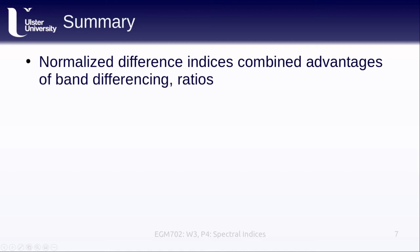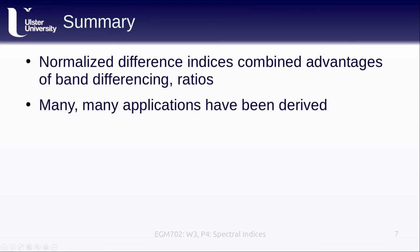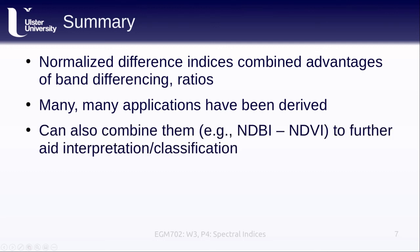To summarize, normalized difference indices combine the advantages of band differencing and band ratios while avoiding many of their disadvantages. There are many, many applications — I've talked about four of them, but there are many more; one of the textbooks has several pages listing different normalized difference indices. We can also combine indices, for example NDBI minus NDVI, to further aid in interpretation or classification.